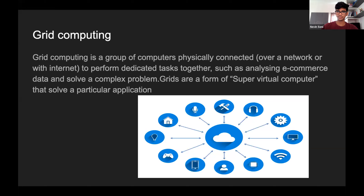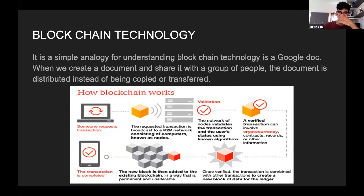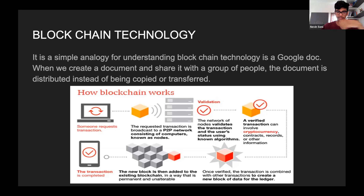Grid computing is a group of computers physically connected over a network with the Internet to perform dedicated tasks together, such as analyzing e-commerce data and solving complex problems — it forms a kind of super virtual computer to solve particular applications. Blockchain technology can be understood with a simple analogy: like a Google Doc that is shared with a group of people — the document is distributed instead of being copied or transferred. Thank you.